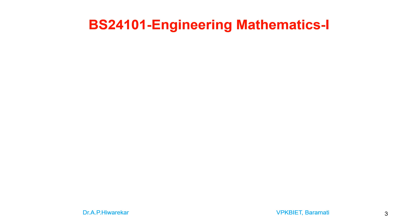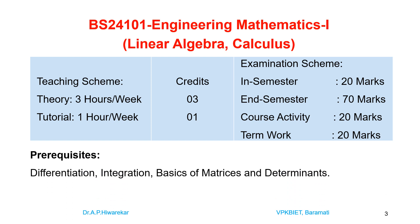Engineering Mathematics 1 consists of Linear Algebra and Calculus. In this particular course, we require differentiation, integration, and basics of matrices and determinants as a prerequisite. This course is for 4 credits — 3 credits for theory lectures which are 3 hours per week, and 1 credit for tutorial which is 1 hour per week, conducted batch-wise.